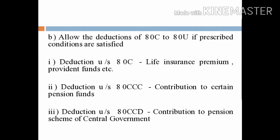From this amount, we will calculate the tax. We have certain deductions under sections 80C to 80U. Those deductions can be allowed, and we will calculate the total income. Then we will calculate the tax. Allow the deductions from 80C to 80U if the prescribed conditions are satisfied.